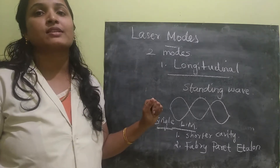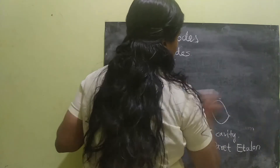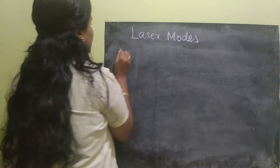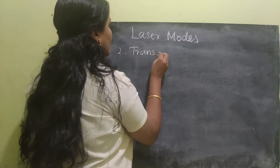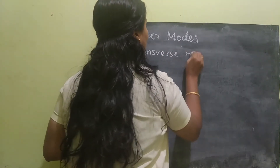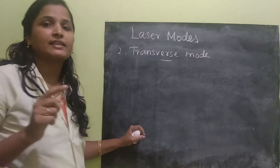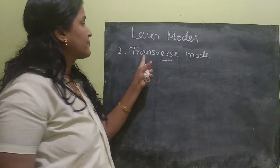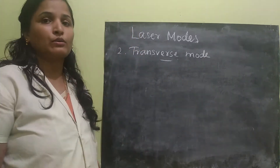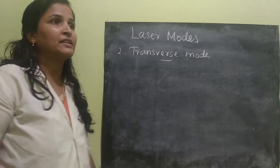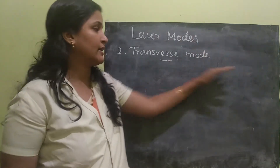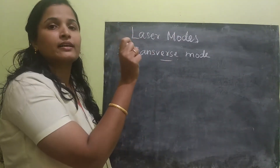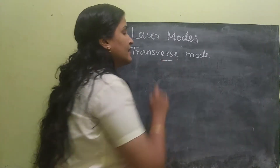Now let's see the second mode, which is transverse mode. Longitudinal means along the optical axis; transverse means it is perpendicular to the propagation. Just imagine the laser is traveling in a particular direction along the axis — we are cutting the laser beam and viewing the cross section of it. That is the transverse mode.